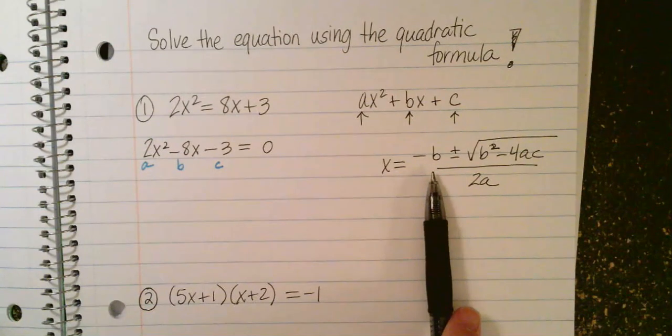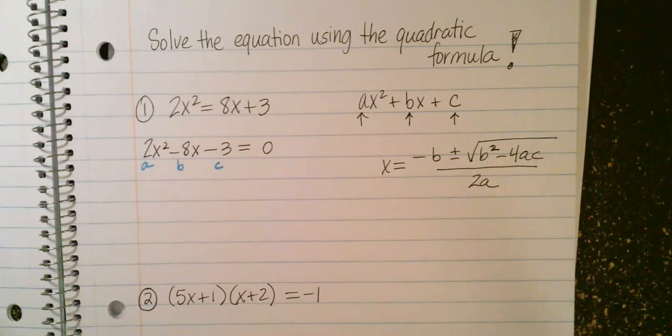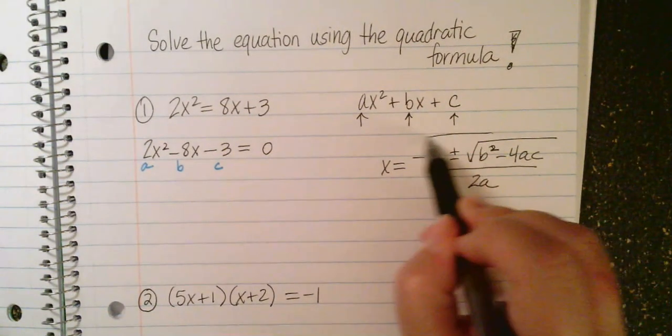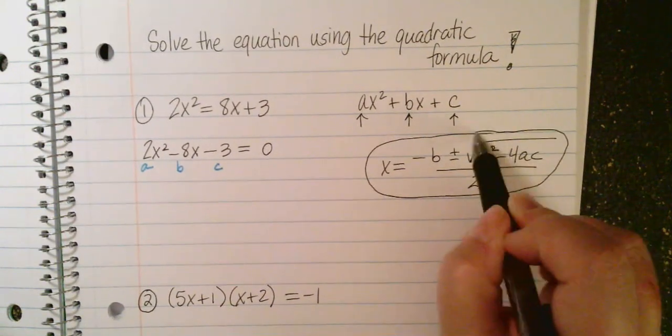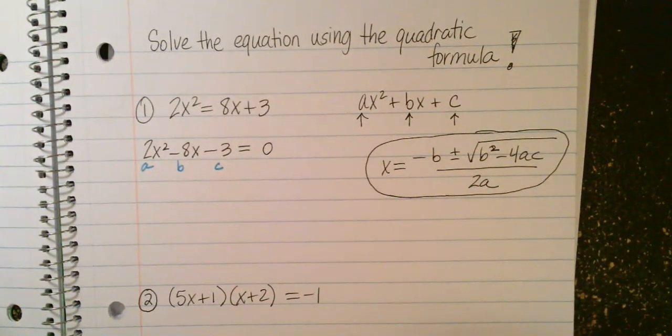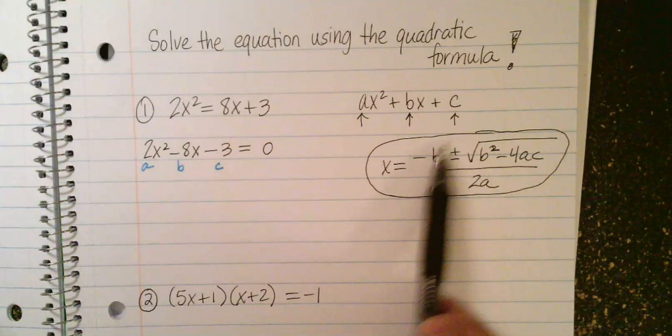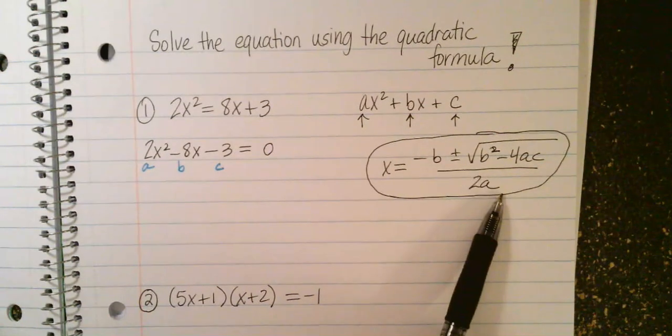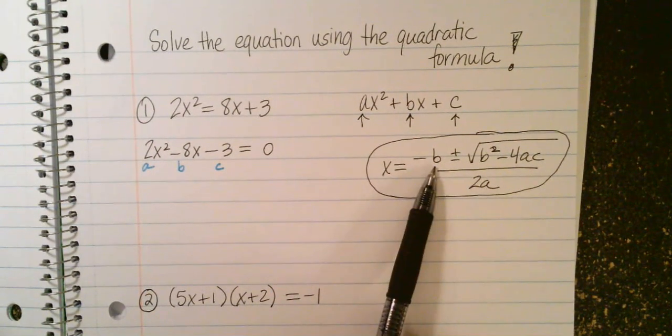A couple of things to know about the quadratic formula. Actually, three big things I want to impress upon you. One is that it always works. You can use this for any quadratic. So that's the beauty of it. You can't always factor. You can't always take the square root, at least not until you complete a square. But you can always use the quadratic formula. The drawback, the reason we don't just do it all the time, is that there's a lot going on in here. And so it's very easy to make an arithmetic mistake or a sign mistake. So be super careful when you're plugging in and simplifying.